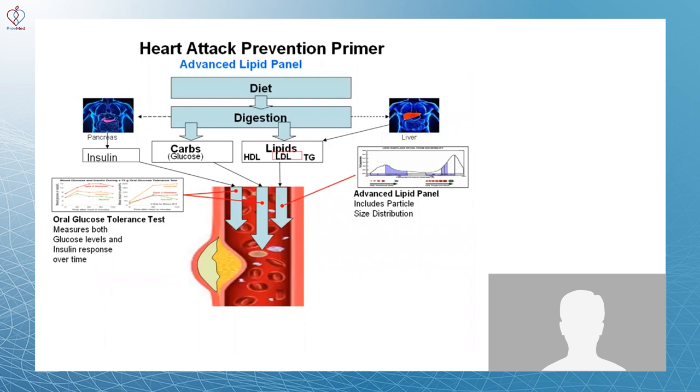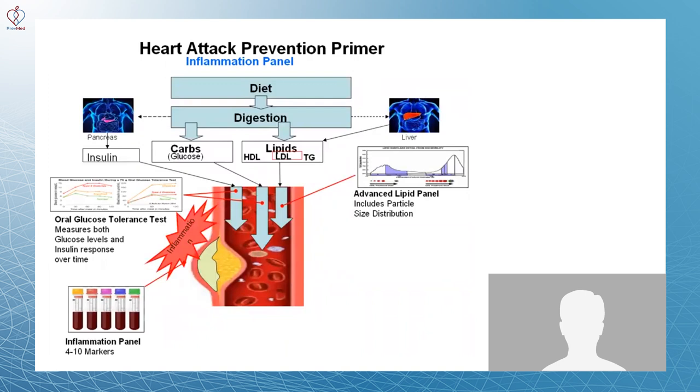Third area is inflammation. With the help of Dr. Brewer, we're looking at four markers right now that I'm tracking, whereas before it was just one inferior marker. And I'll get into a little bit of detail there.